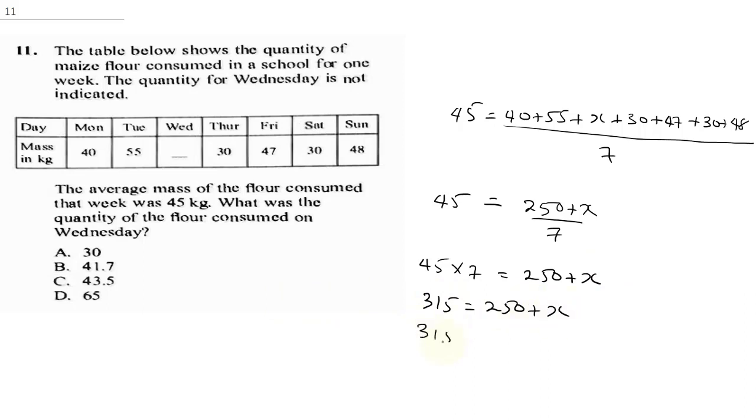From here, you can collect like terms and say 315 minus 250 is going to give us x. Therefore, our x would be 65. So final answer, 65. The correct answer here is D.